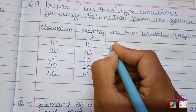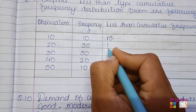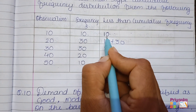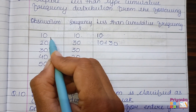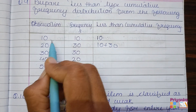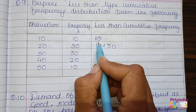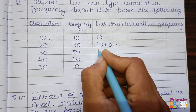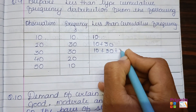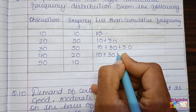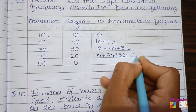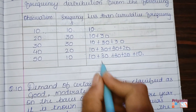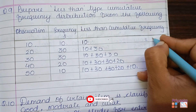The first frequency included is 10. The next is 10 plus 30. Remember: when the information is given in discrete value, directly copy the first frequency. If it is given in continuous form, the first less than value will be 0. Because it is discrete, continue with the frequency: 10 plus 30 plus 30, then 10 plus 30 plus 30 plus 20, then 10 plus 30 plus 20 plus 10.